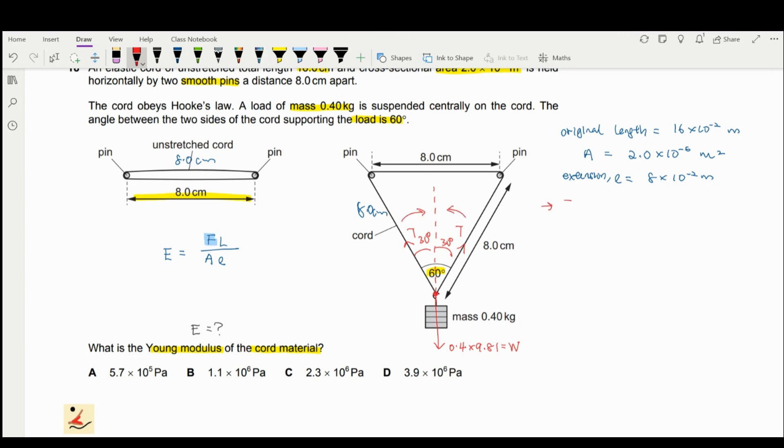So dealing with the forces, you have T cosine 30 plus T cosine 30 to give you 0.4 times 9.81. So the upward forces should be equal to the downward forces. So you have 2T cosine 30 equal to 0.4 times 9.81, which is your weight.